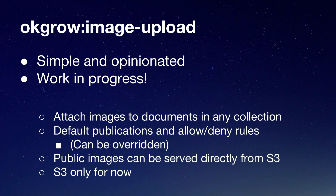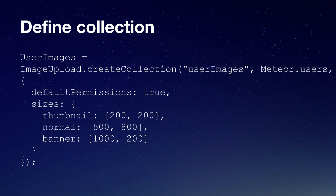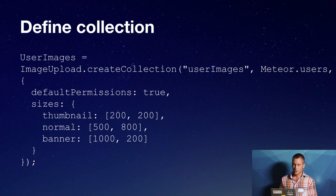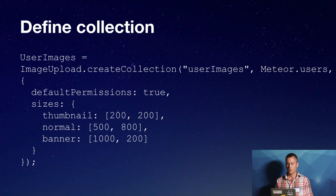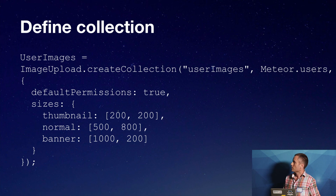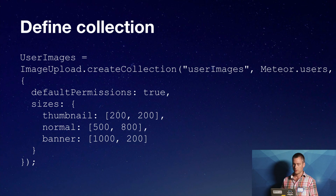It will generate default publications and allow-deny rules, which you can always customize. It will let you, if you want to, serve your images directly from S3. It supports S3 only right now as a backend — that's what we use. This is what it looks like. So this is how you define a profile image for your users. This will create a collection called user images that is associated with Meteor users, give it the default permissions, and it will store four different sizes: the original, one called thumbnail at 200 by 200.